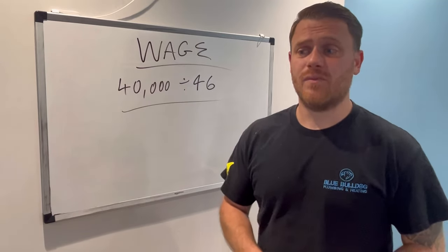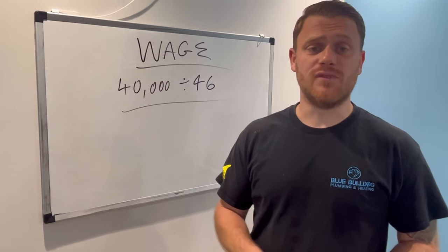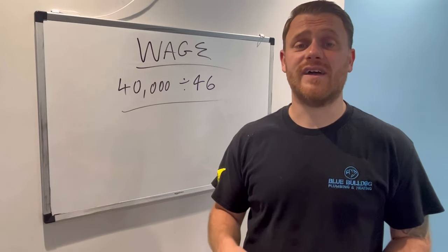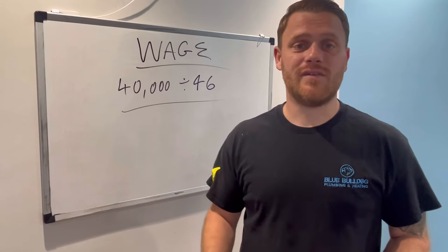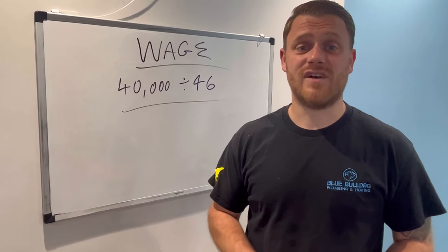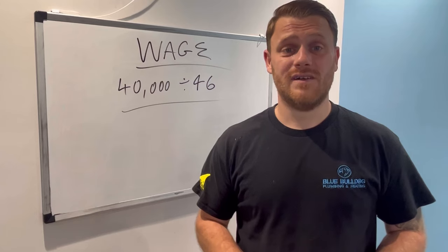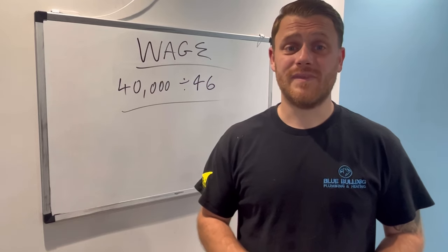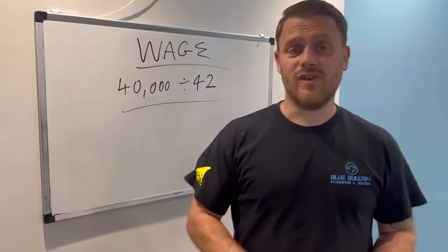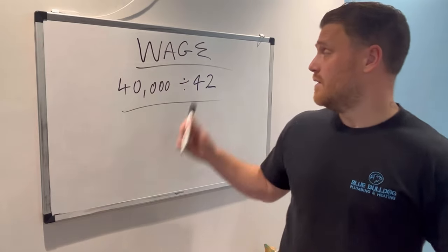What about the days you're doing admin — your books, quotes, invoices — or when the van needs half a day of sorting out to make yourself more efficient? That's still part of your business and you should be getting paid for it. So we're going to allow 20 days over the year for that, which is 4 weeks, bringing us from 46 down to 42 working weeks.